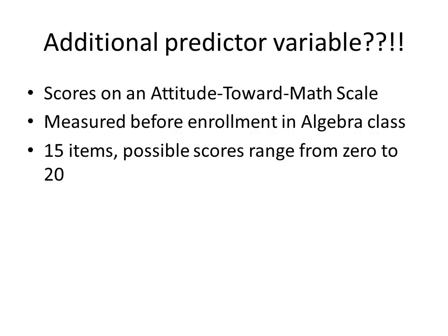The attitude toward math scale was measured before enrollment in the algebra class. The attitude scale had 15 items, and the possible scores ranged from zero — which means a low attitude toward math, essentially disliking it — to 20, which would be the highest score, meaning you have a pretty good attitude toward math and feel comfortable doing it.